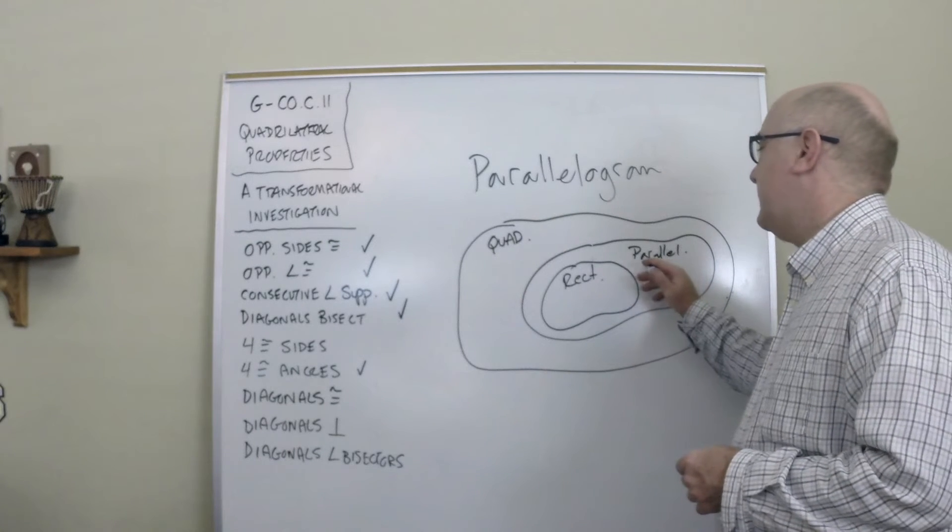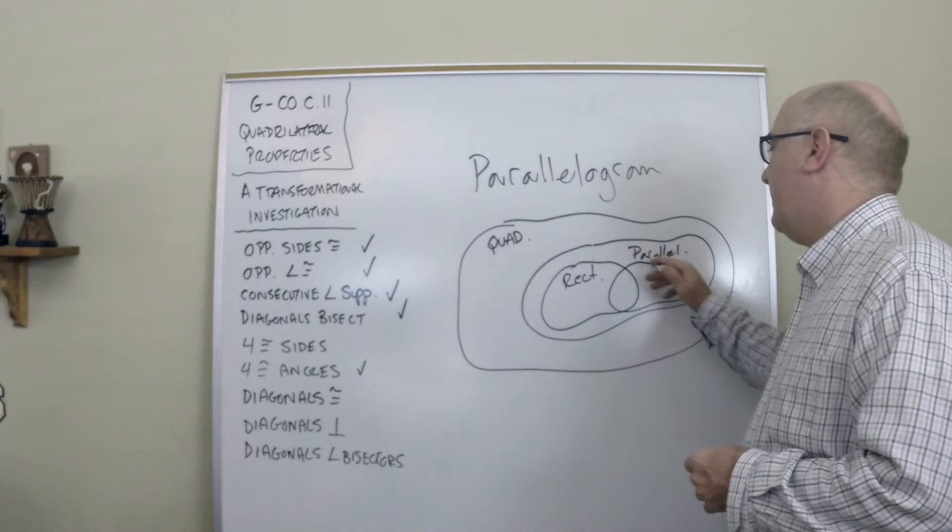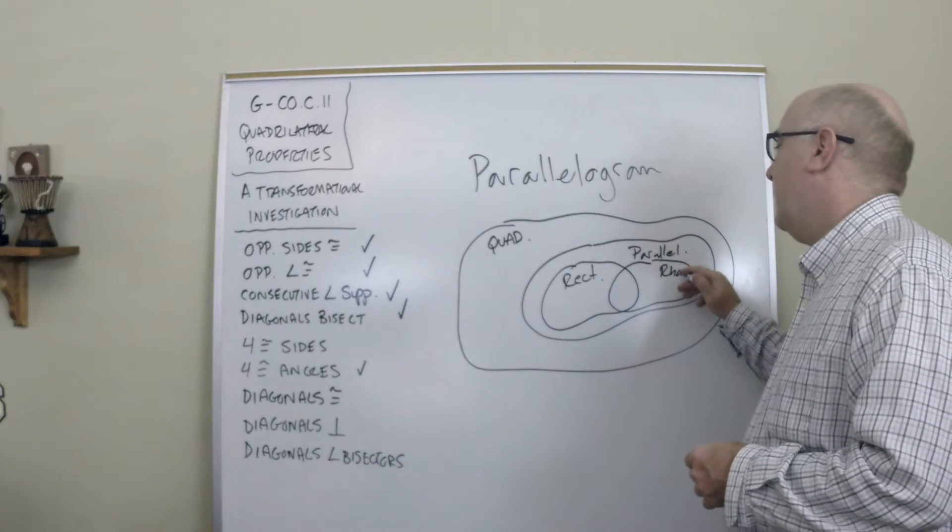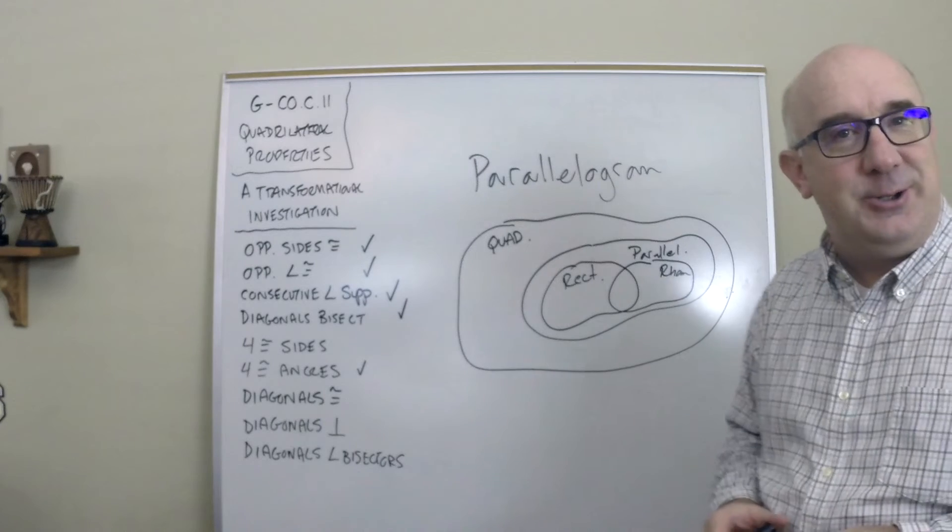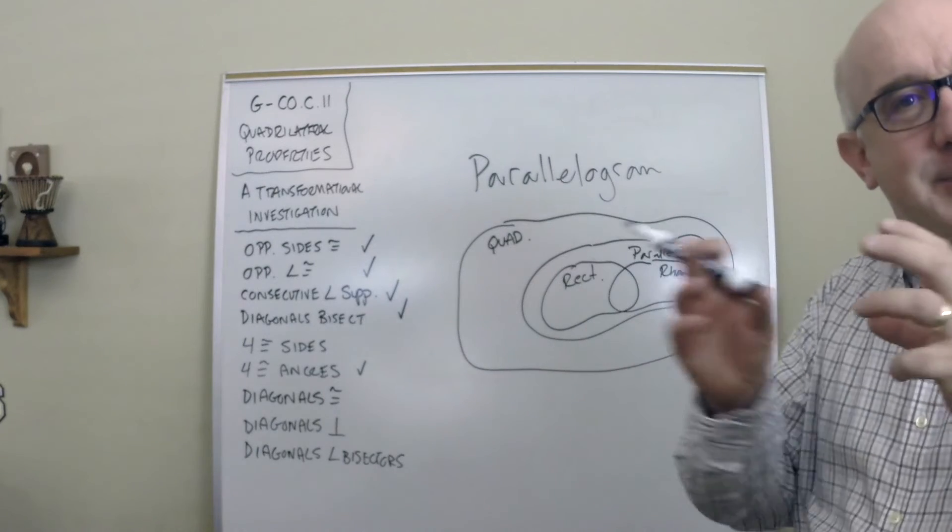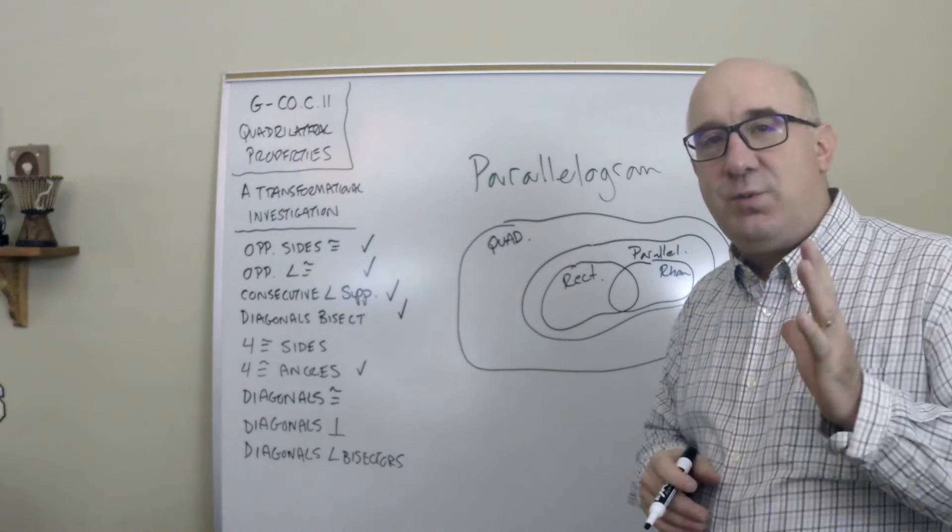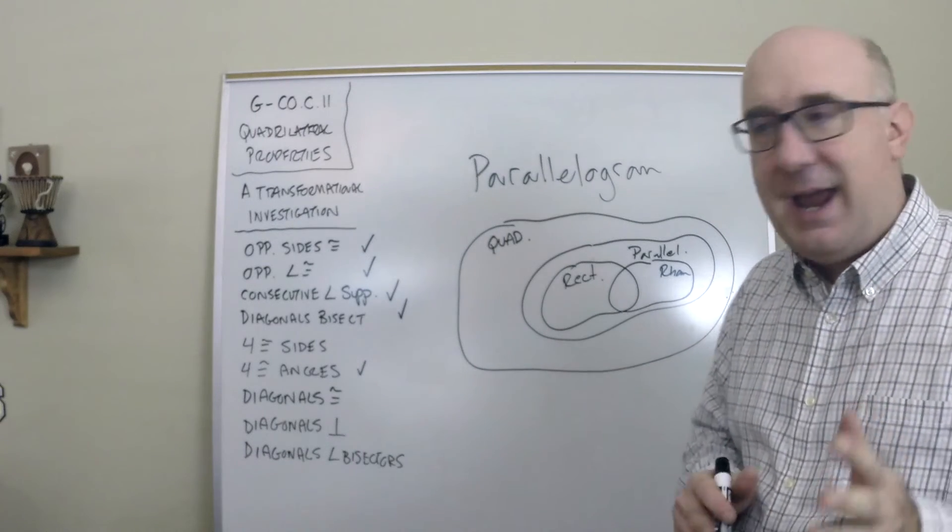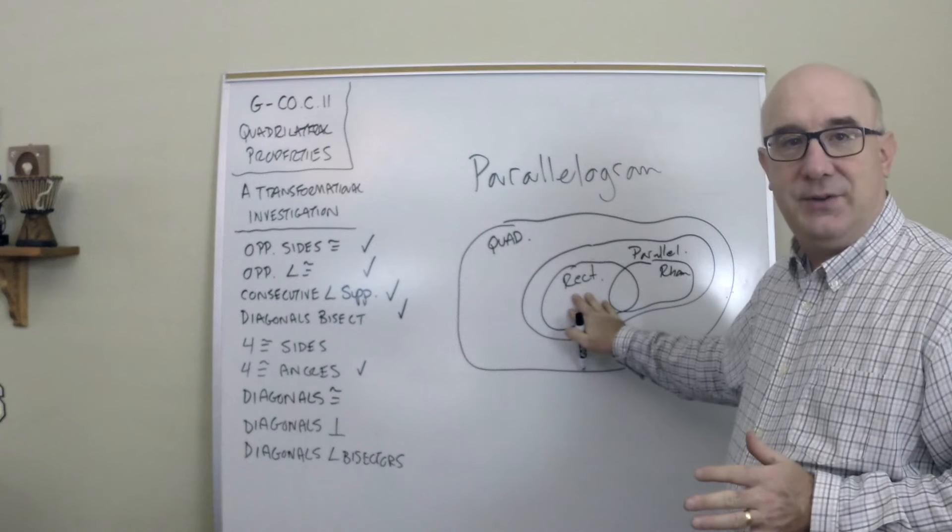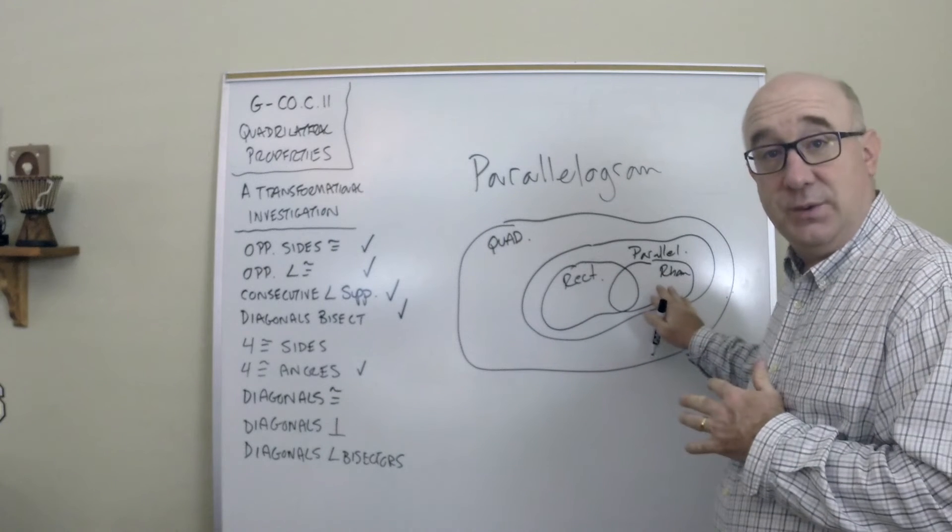Well, guess what? The rhombus is in here too. It's a type of parallelogram, the rhombus. And you'll notice that when I drew it, I intersected it with the rectangle group because there's one group that can have four right angles and four equal sides.